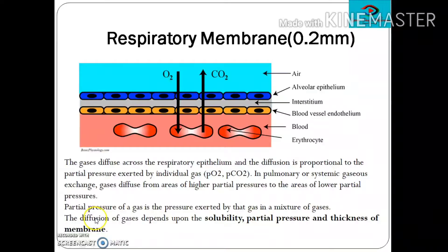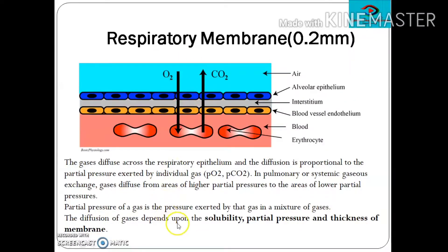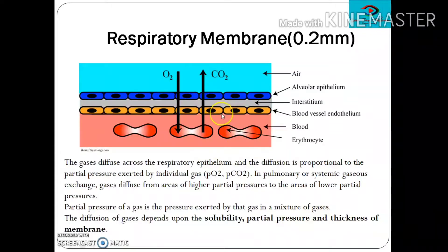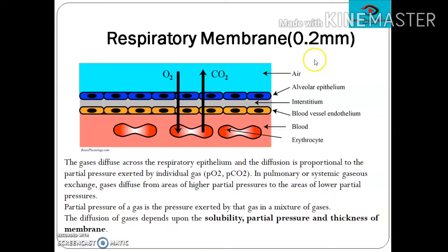The diffusion across the respiratory epithelium or respiratory membrane is dependent upon the solubility of that gas, the partial pressure of that gas, and the thickness of the respiratory membrane. Generally in healthy conditions the thickness is 0.2 mm, but in diseased conditions this may change.